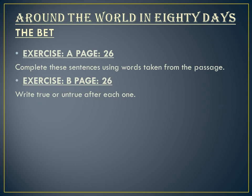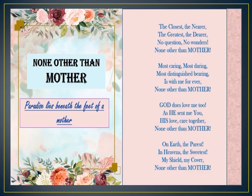The next chapter is 'Around the World in 80 Days,' which we discussed in the September Week 1 session. Exercise A of page number 26 requires you to complete sentences using words taken from the passage. In Exercise B of page number 26, you will write 'true' or 'untrue' after each sentence.